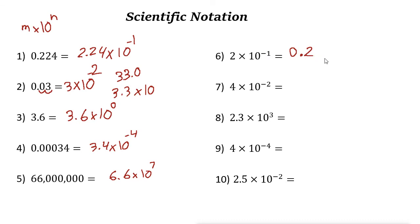For 4 times 10 to the power of negative 2: write 4, and since the power is negative 2, you need to move the decimal point 2 places. You can write zeros before 4 without changing its value — 004 is the same as 4. Moving the decimal point gives 0.04, so four hundredths is 4 times 10 to the power of negative 2.